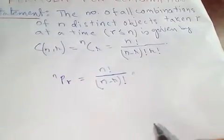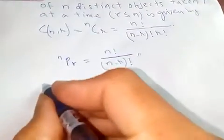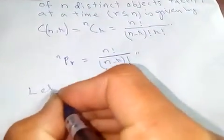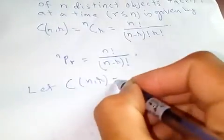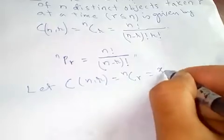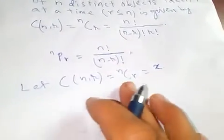Let the number of combinations of n objects taken r at a time be x. Let C(n,r) or nCr be denoted by x so that we can understand. Instead of writing this one, if we replace it by x, it will be easier.